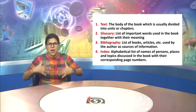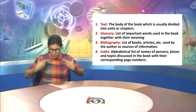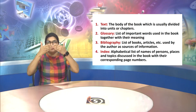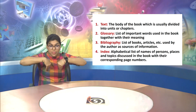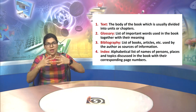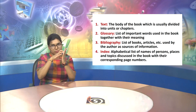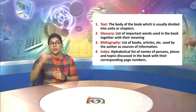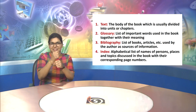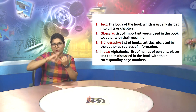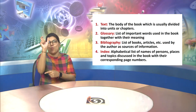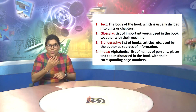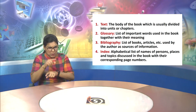Text: The body of the book, which is usually divided into units or chapters. Point 2 is the Glossary: a list of important words used in the book together with their meanings.